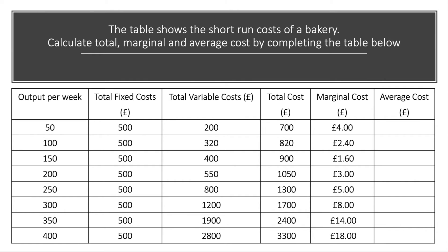The average cost is fixed plus variable costs divided by output — cost per unit. Here's the calculation check for you on average cost per unit. Very high at the start, £14 per unit, but falling pretty steeply initially, then levelling off. The optimum cost here is £5.20 if we make 250 baguettes per week, and thereafter the average cost starts to go up again.